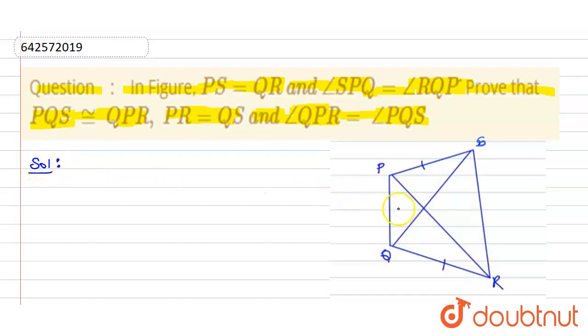So taking the two triangles, the first one is QPR and then next one is SPQ. So in triangle QPR and triangle PQS,